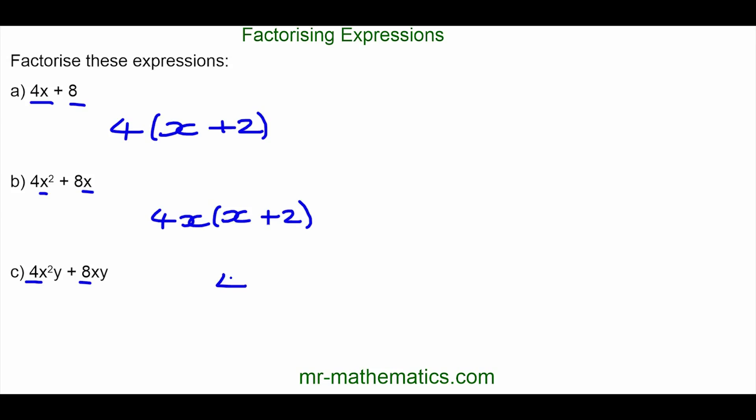In the next question, 4 is common again as is x. The highest common factor this time is 4xy because y is common to both also. 4xy multiplied by x will give you the x squared term and 4xy multiplied by 2 will give you the 8xy.